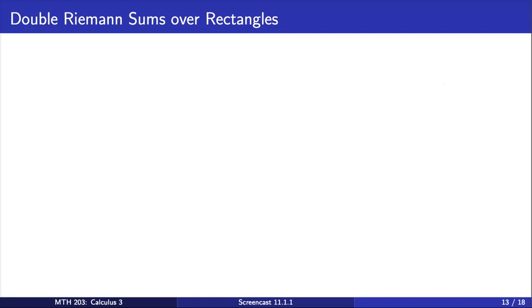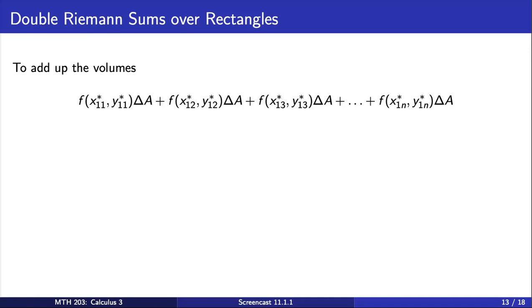Now that we've seen what these rectangular boxes look like, how do we add up the volumes to get our approximation? Well, we take the volume of the first rectangular box, plus the volume of the second, plus the volume of the third, and we keep summing until we get to the end of the first row of boxes.